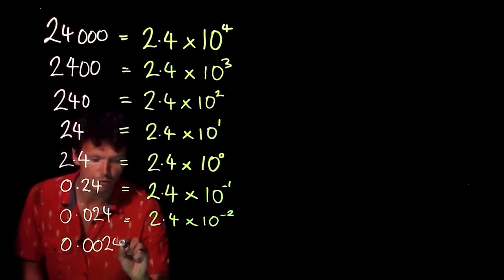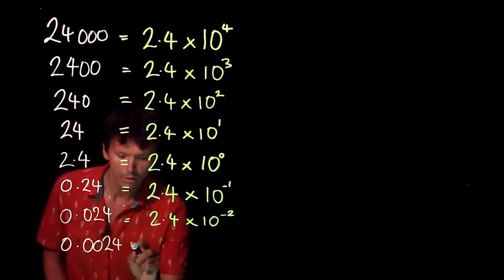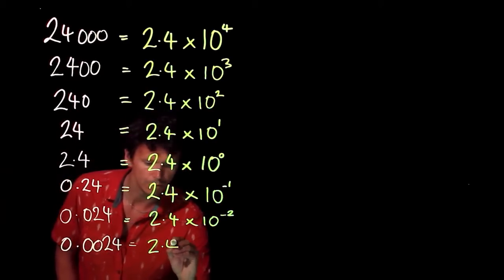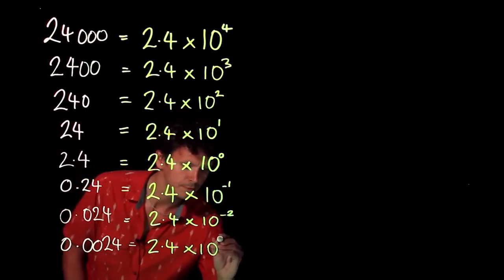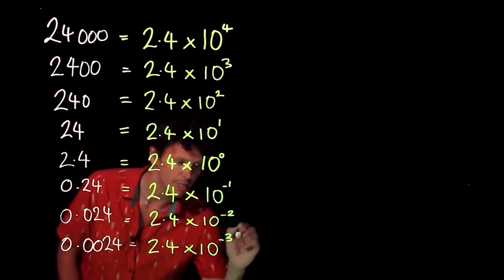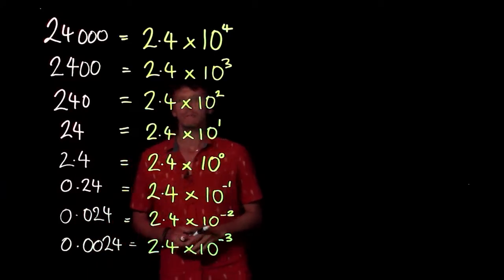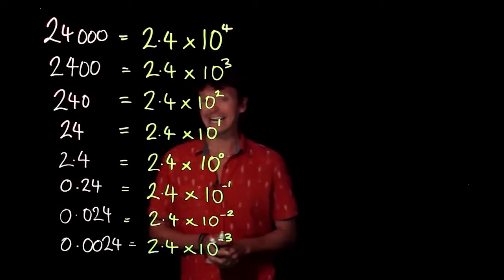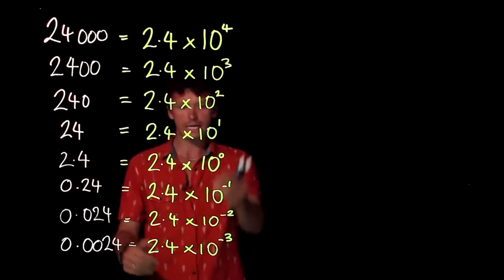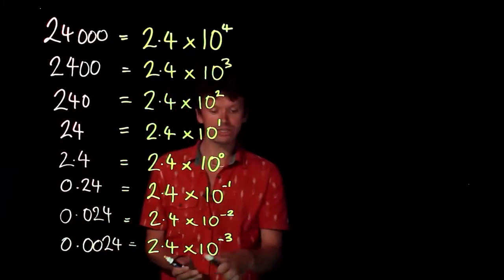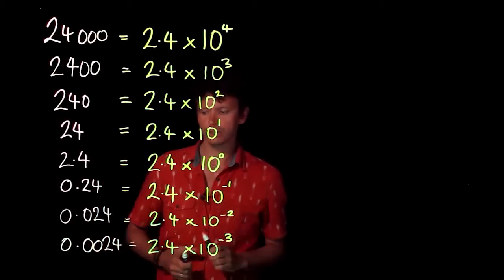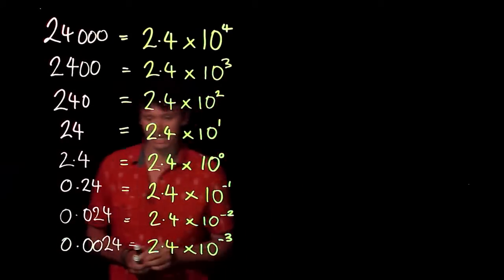0.0024 equals 2.4 times 10 to the minus 3. There's an interesting pattern that's developed here, and as we've developed the pattern, we can start to see how we handle these numbers that are lower than 1 and how we use negative powers to do that.